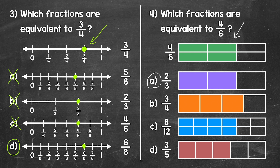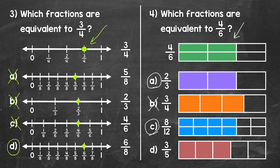Let's move on to B, where we have 3 fourths. Is 3 fourths equivalent? No, 3 fourths is greater than 4 sixths — a greater amount of that rectangle is shaded in, so this is not equivalent. Taking a look at C, we have 8 twelfths. 8 twelfths has the same amount of the rectangle shaded in, so 8 twelfths is an equivalent fraction. And lastly, choice D, we have 3 fifths. Is 3 fifths an equivalent fraction? No, 3 fifths is less than 4 sixths — less of the rectangle is shaded in, so this is not equivalent.